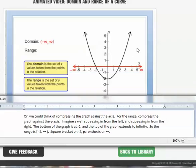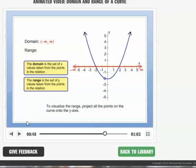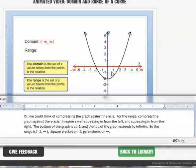For the range, think of compressing the graph against the y-axis. Imagine a wall squeezing in from the left and squeezing in from the right. The bottom of the graph is here at negative 2 and the top of the graph extends to infinity. So the range goes from negative 2 to infinity, square bracket on the negative 2, parenthesis on infinity.